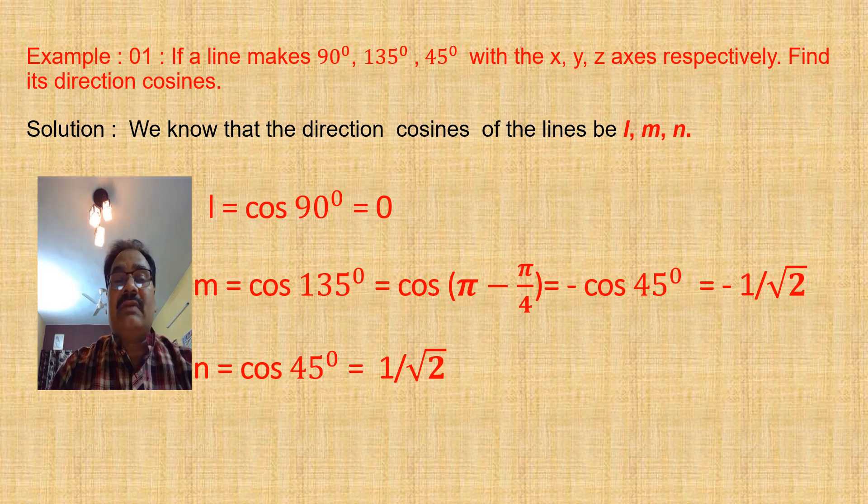If a line makes 90°, 135°, and 45° with the x, y, z axes respectively, then what are its direction cosines?